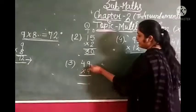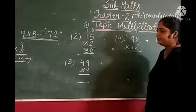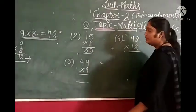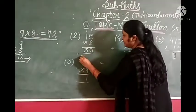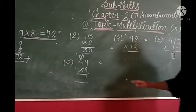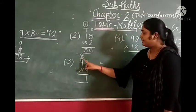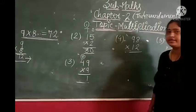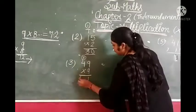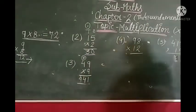The third example is 49 multiplied by 9. 9 nines are 81. We write 1 here and 8 is carryover. Next number is 4. 9 fours are 36. 36 plus 8, what do we get? We get 44. So our answer is 441.